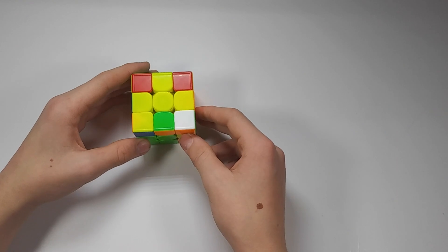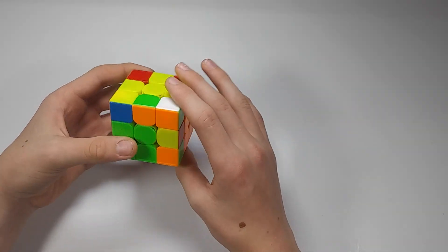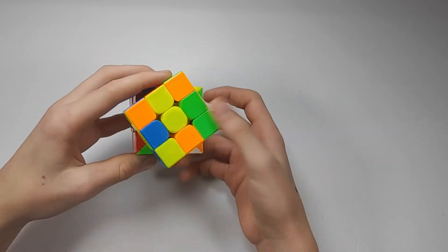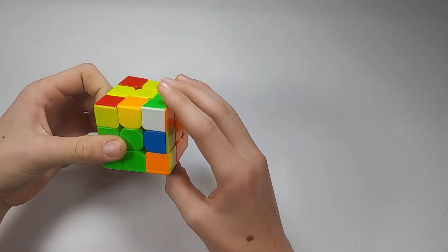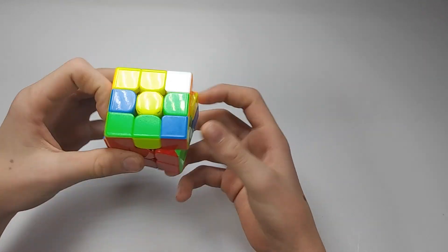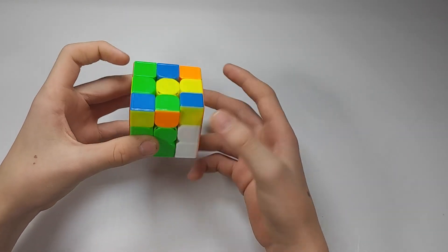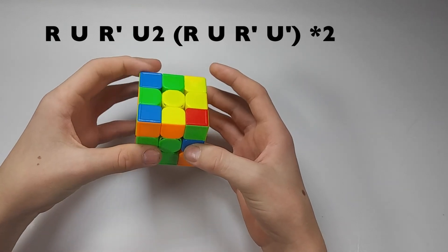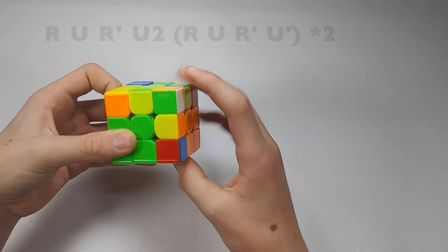Getting on to the second case, what you would normally do is un-pair these two, do a rotation, and then set it up for a three-move insert. But what you can do instead is R, U, R', U2, double sexy move.